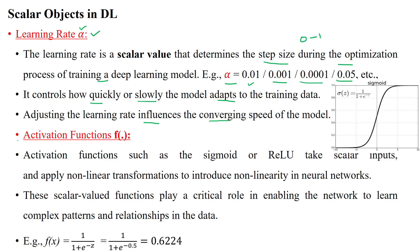We have activation functions, represented by formulas like sigmoid, ReLU, leaky ReLU, or tanh. These take scalar value inputs and apply non-linear transformations to introduce non-linearity in neural networks. The input is a scalar value and the output is also a scalar value.